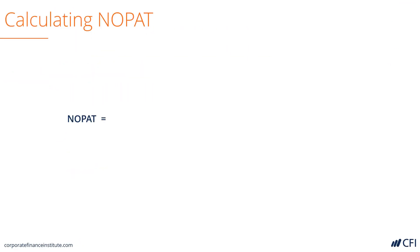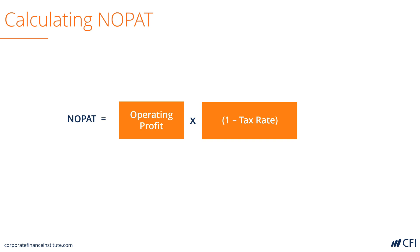Let's start by looking at NOPAT, Net Operating Profit After Taxes. It's equal to Operating Profit, which is EBIT, or Earnings Before Interest and Taxes, multiplied by 1 minus the tax rate. The logic here is that we're calculating what the net income of the business would be if it did not have any interest expense to deduct. So there's going to be a higher tax bill, but no interest expense. Net-net, NOPAT should be slightly higher than regular net income.